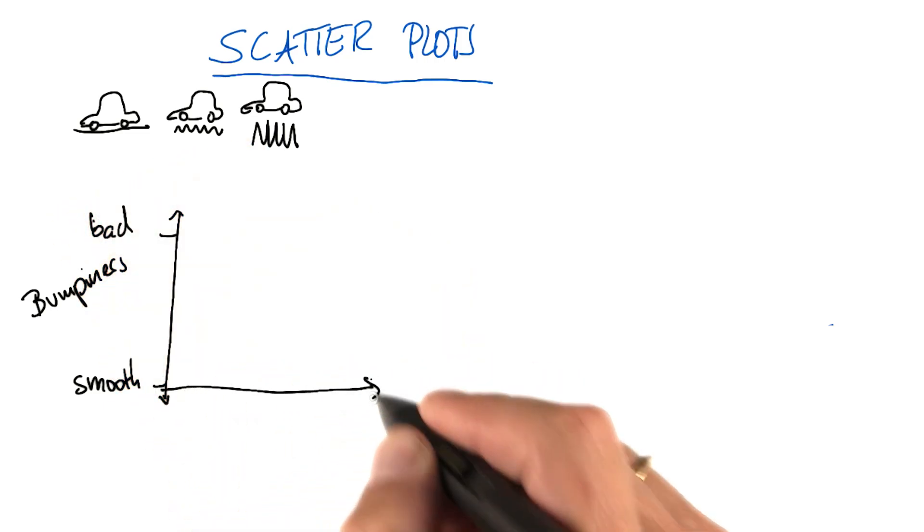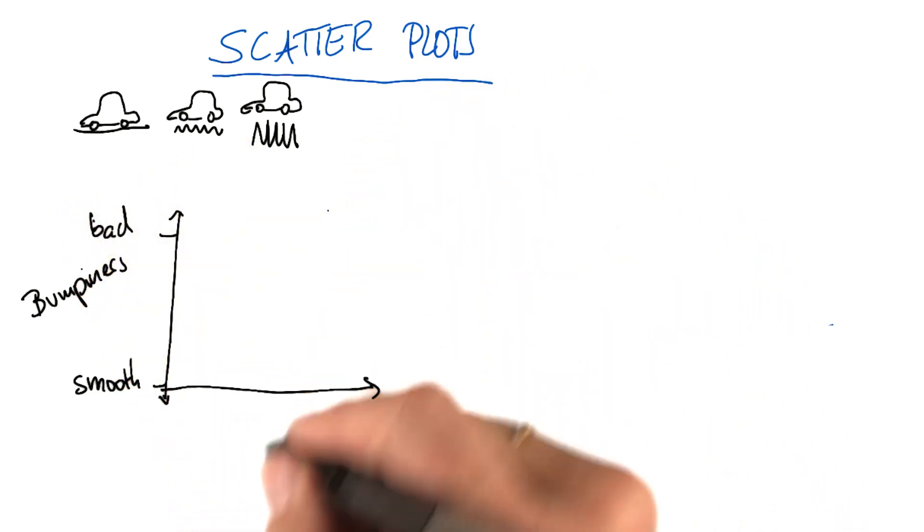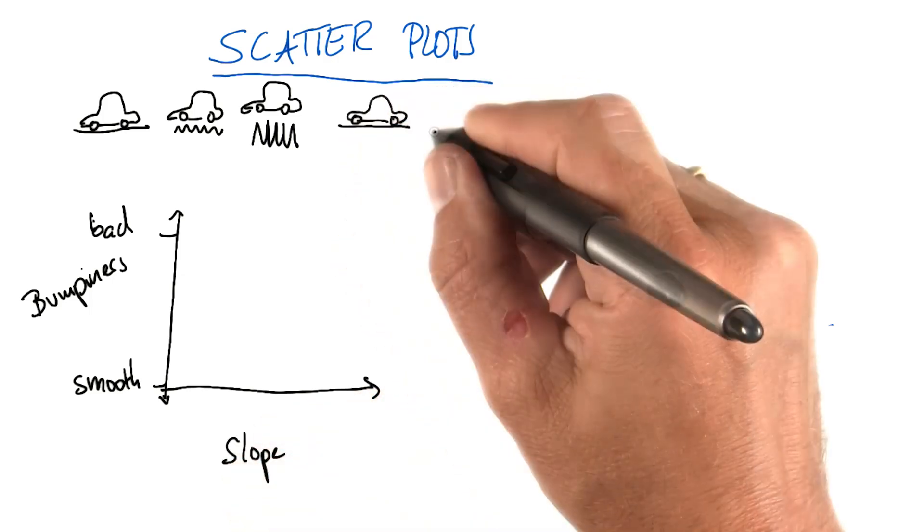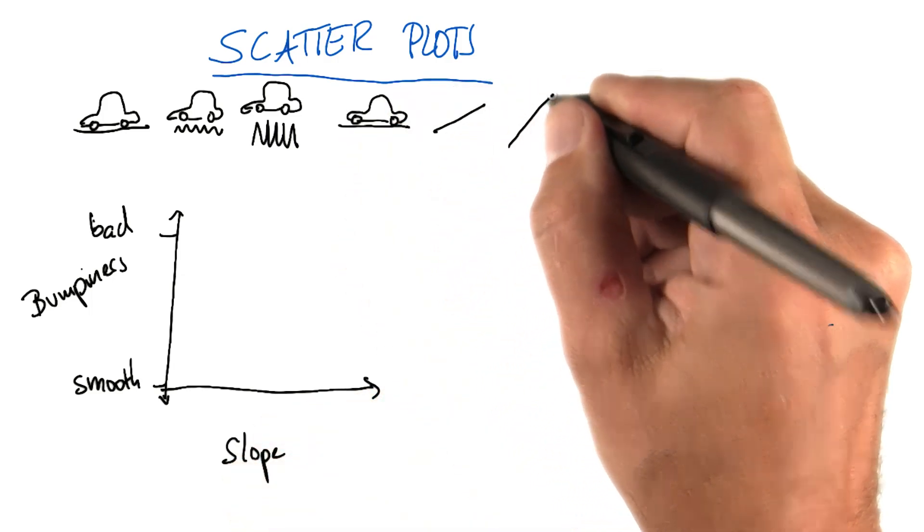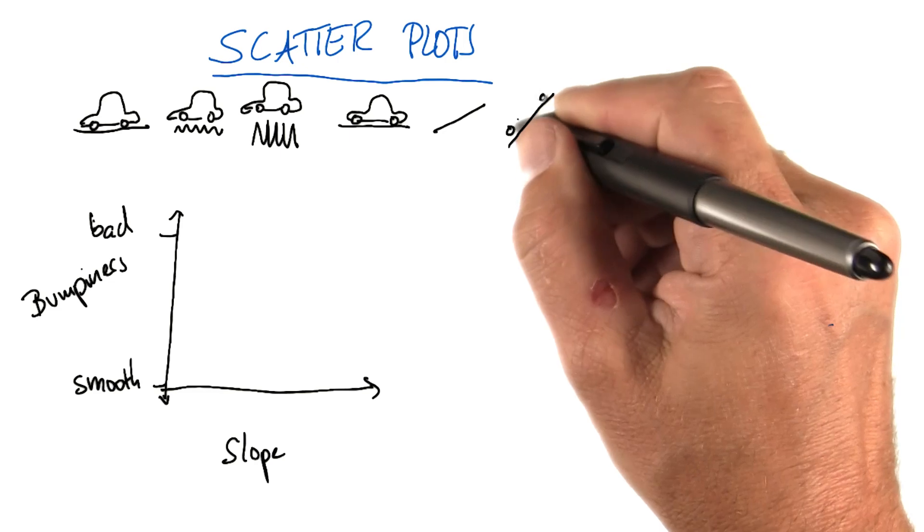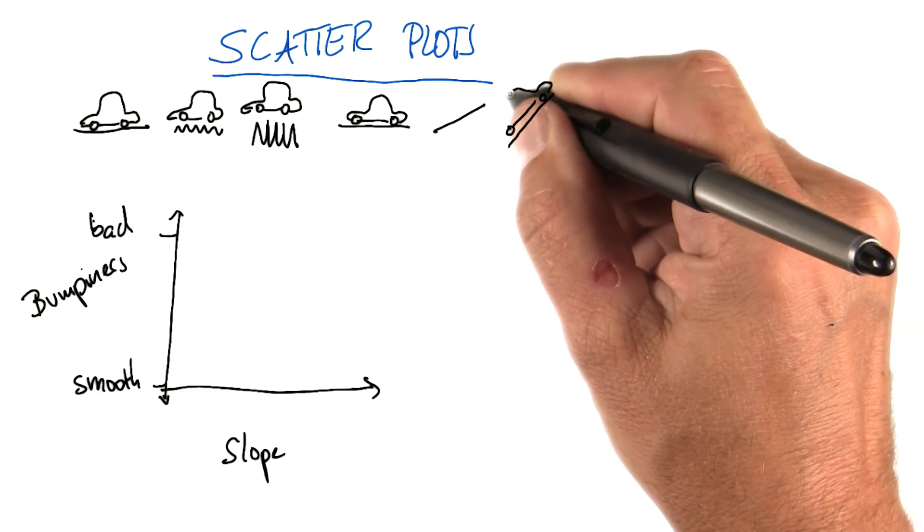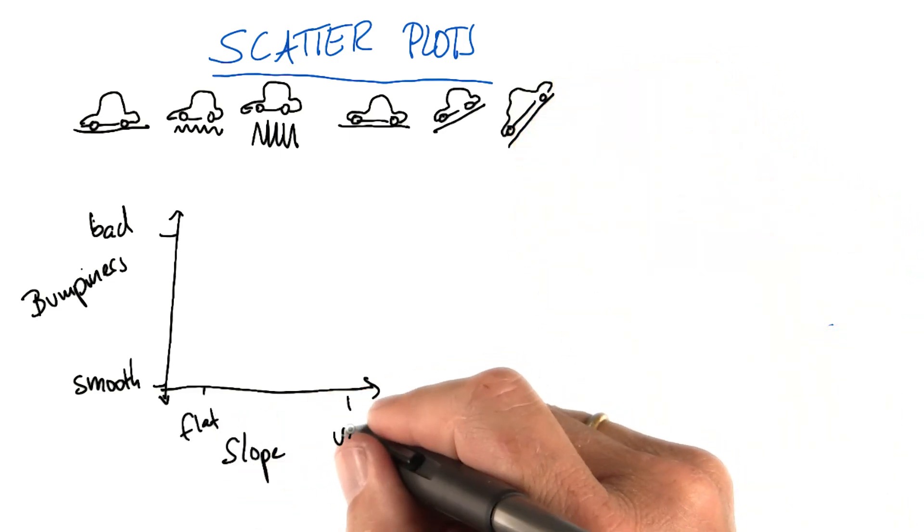Second dimension in which our terrain varied had to do with slope. It would be flat or there were different levels of steepness. I'm obviously slightly exaggerating here. So it goes from flat to very steep.